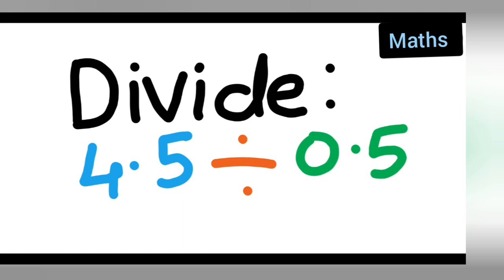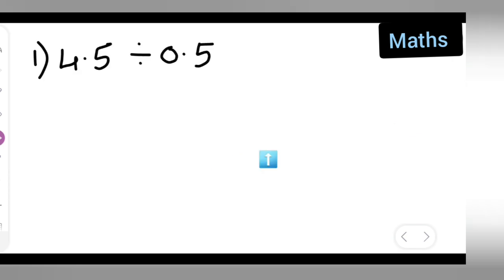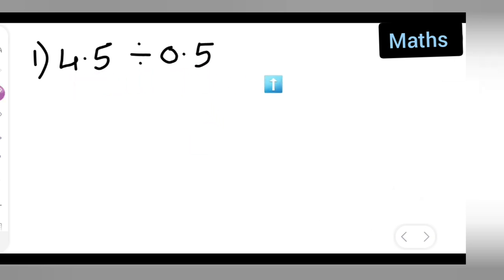Welcome to today's class of mathematics. Today's question is 4.5 divided by 0.5. Let us see how to divide these numbers with a decimal point. So first thing is, we need to divide 4.5 by 0.5, and we'll do this in a stepwise order.